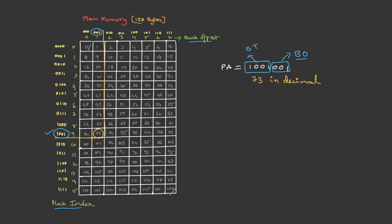Let's take one more example. Suppose the physical address is 0100011 — this is 35 in decimal. If you search for 35, it belongs to row 4 and column 3. Here also we can notice: the block offset is 011, so the least significant three bits are 011. Look at the block index — it is 0100, and here also the rest of the bits are 0100. So basically, the least significant bits are your block offset and the rest of the bits are your block index.